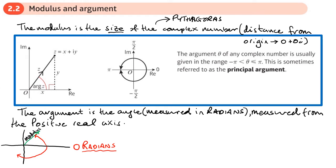For example, if my complex number is up here or around the top, then the angle would be a positive one — so these would have a positive argument. Whereas if the complex number is down here or around the bottom, this would have a negative argument.